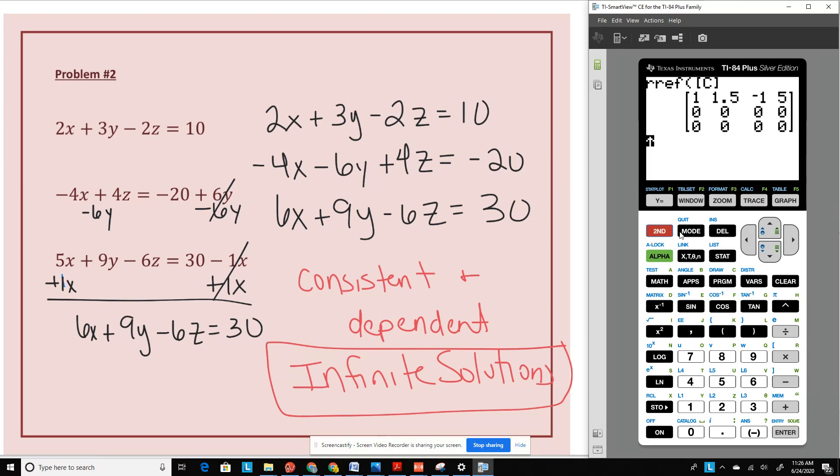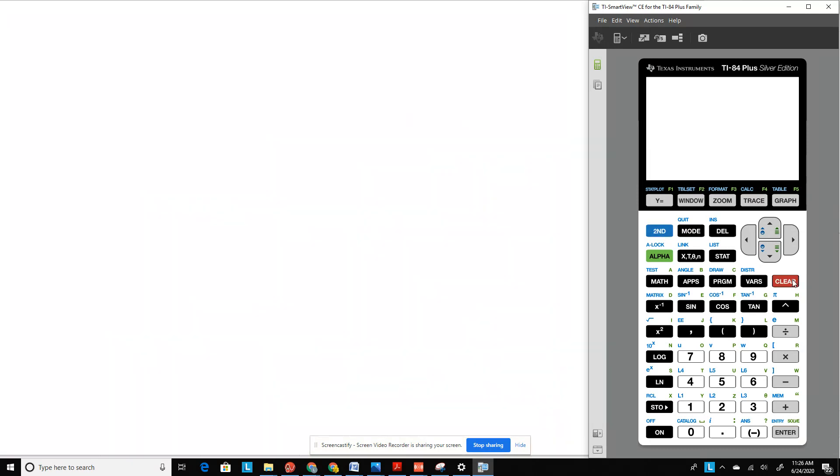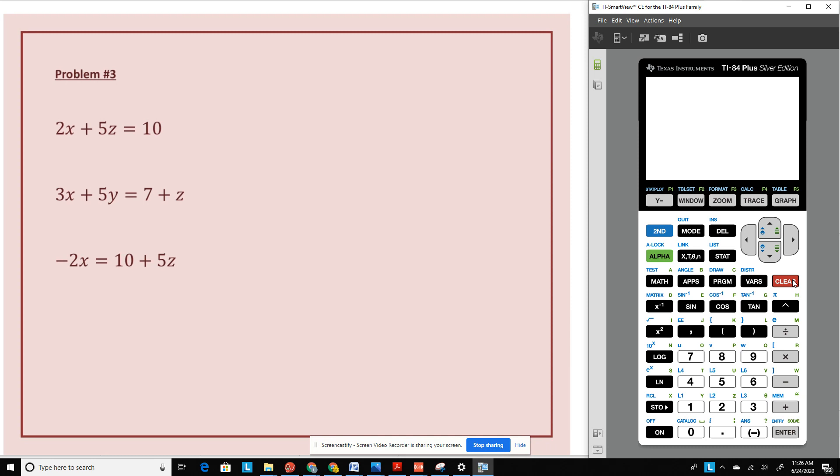The next question. Again, we need to write them in standard form. Now, if you're missing a variable, I find it easiest to make sure you put a 0 where that variable should be. That way, when we are creating our matrix, we know that we need to put a 0 in there for the coefficient.